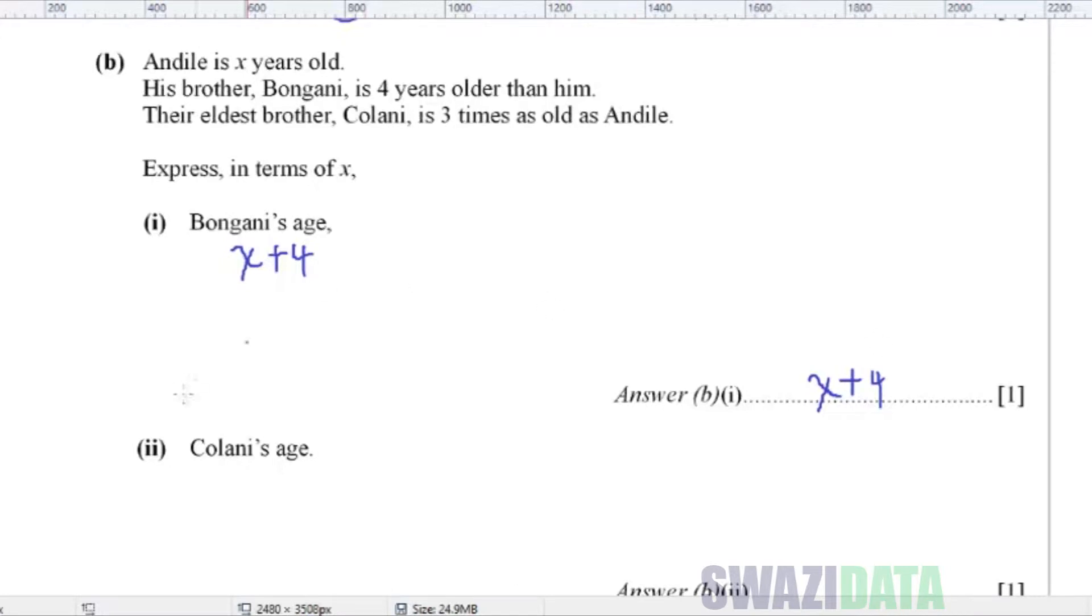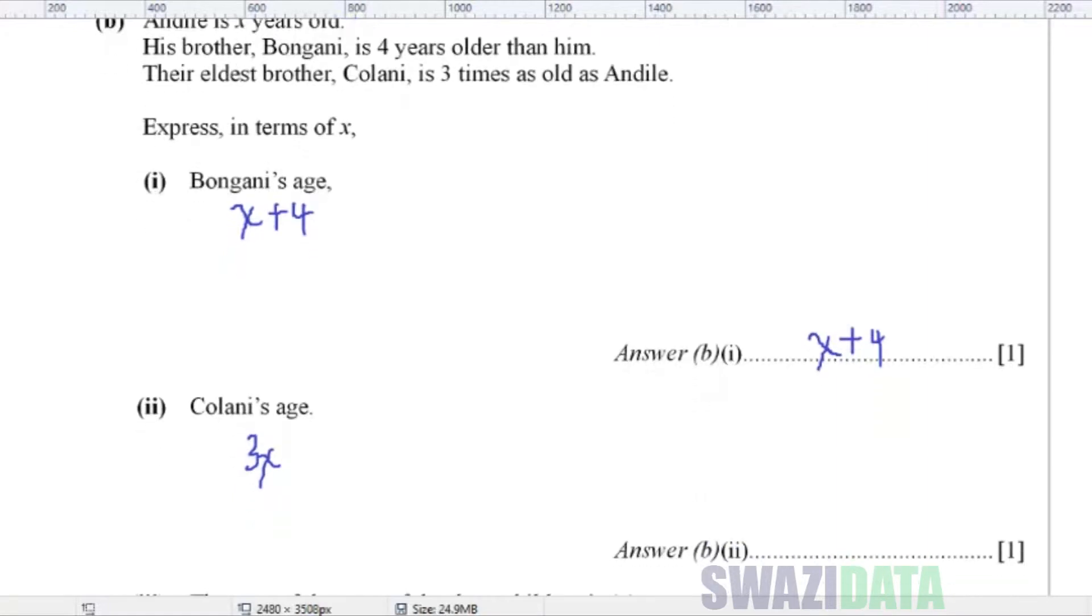Then for part 2, part 2 says Kolane's age. So the eldest brother, Kolane, is three times as old as Andile. So Kolane's age is three times Andile, so it's 3X. So our answer for part 2 is three times Andile's age, so it's 3X.